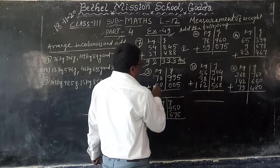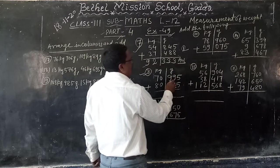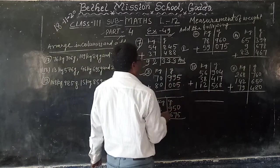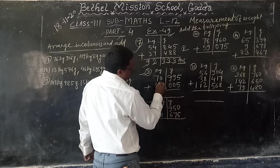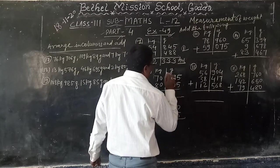Question number 8. 70 kg, 995 gram plus 80 kg, 5 grams.